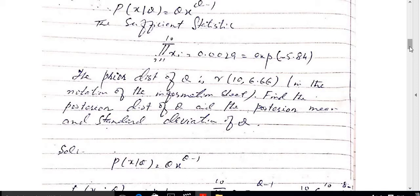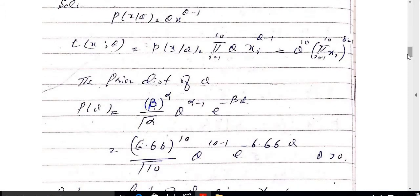The solution: p(x|theta) = theta · x^(theta−1), which is the density function of the power distribution. The likelihood function for n = 10 observations is the product from i = 1 to 10 of theta · x_i^(theta−1). After simplification this becomes theta^10 · product of x_i^(theta−1) for i = 1 to 10, since theta is multiplied by itself 10 times.